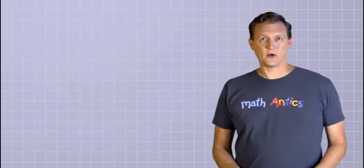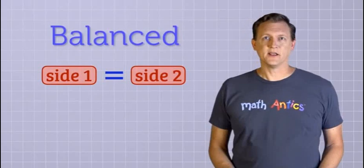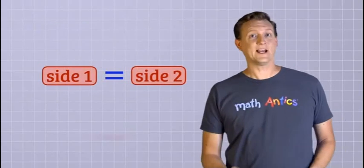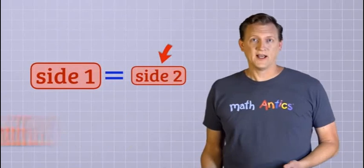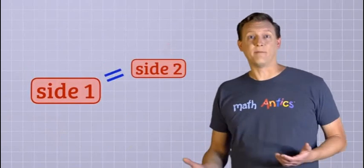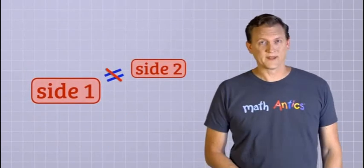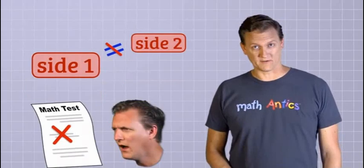The reason we need to know that equations must be balanced is because when we start rearranging them, if we're not careful, we might do something that would change one side more than the other. That would make the equation get out of balance, and it wouldn't be true anymore. And if that happens, we won't get the right answer when we solve it. Oops. That sounds pretty bad, huh?